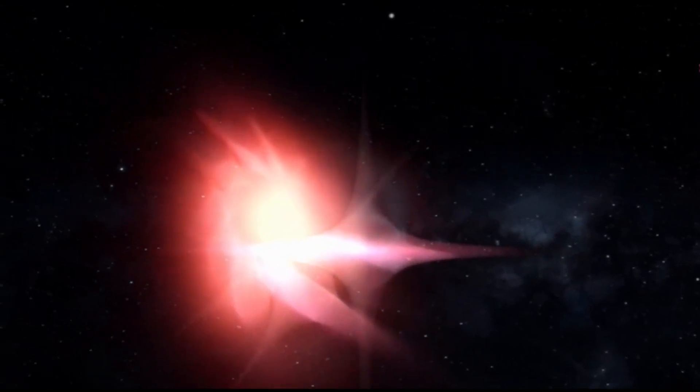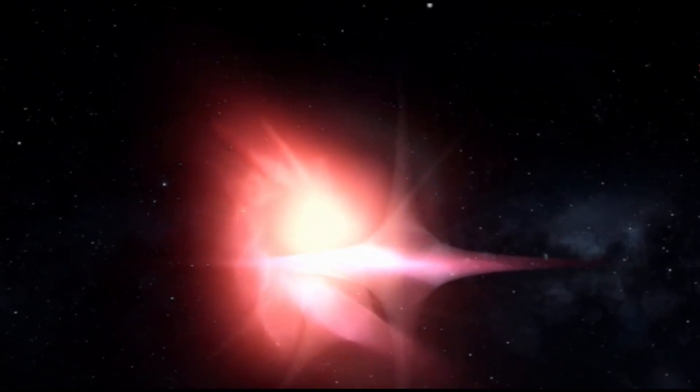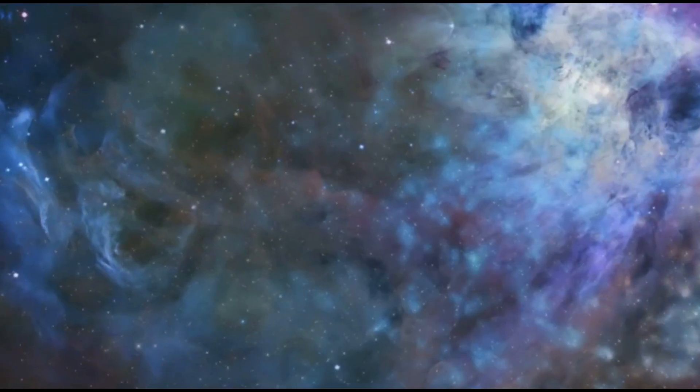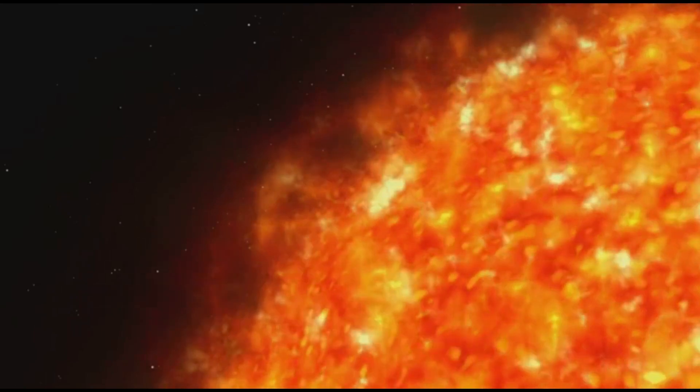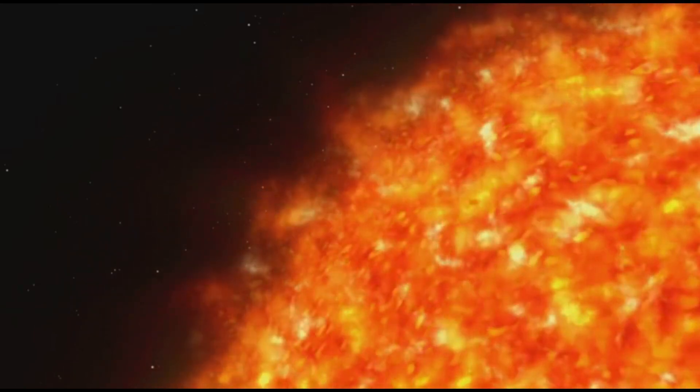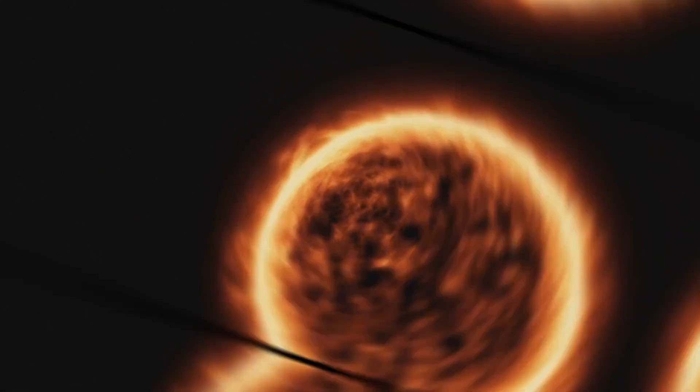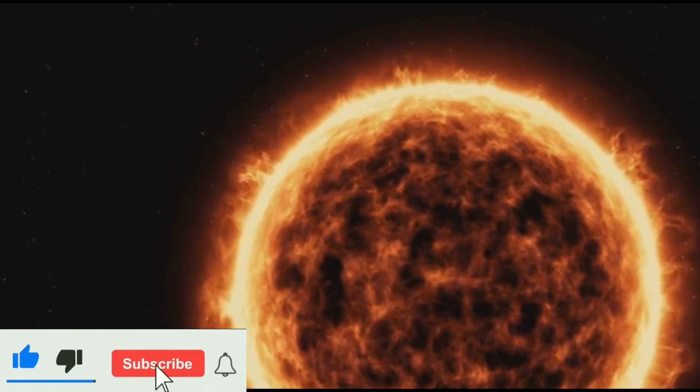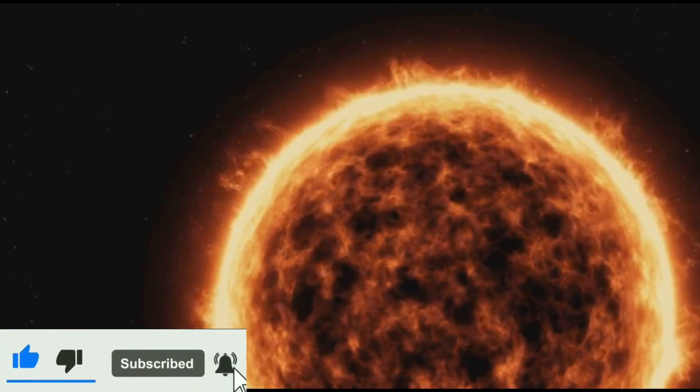However, UY Scuti A also contains trace amounts of heavier elements such as carbon, oxygen, and nitrogen. These heavier elements are forged in the fiery crucibles of stars, created through nuclear reactions that occur at the end of a star's life. When stars like UY Scuti A exhaust their nuclear fuel, they explode as supernovae, scattering these heavier elements into space. These scattered elements then become part of interstellar clouds, the nurseries of new stars.